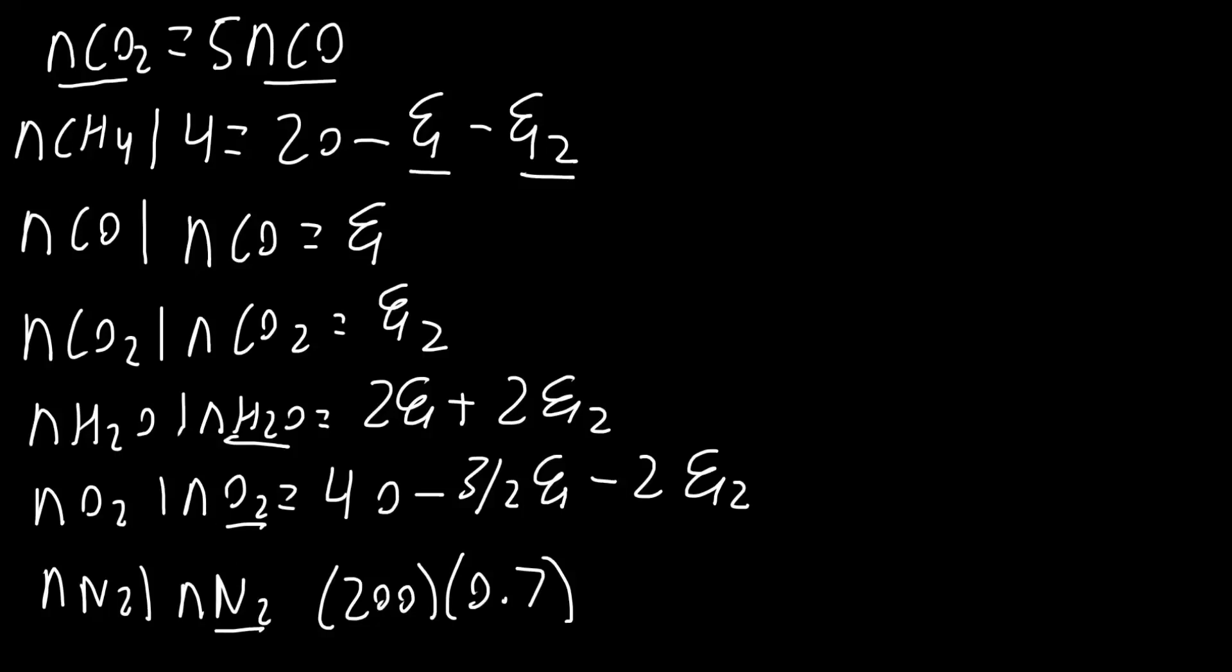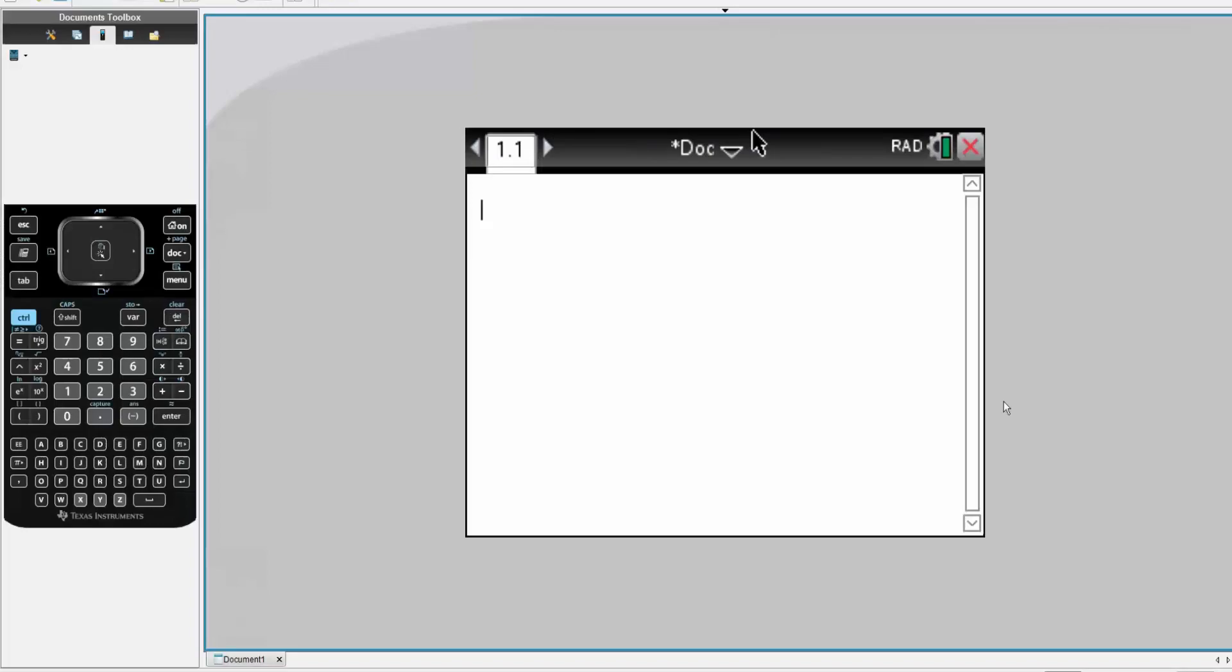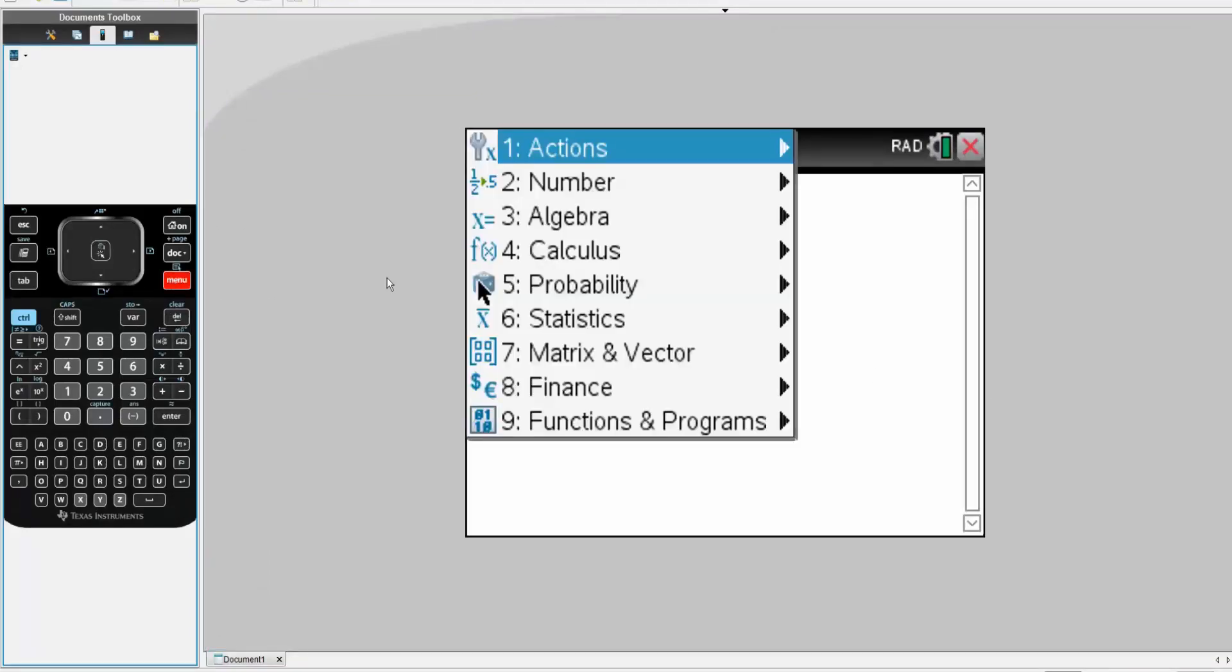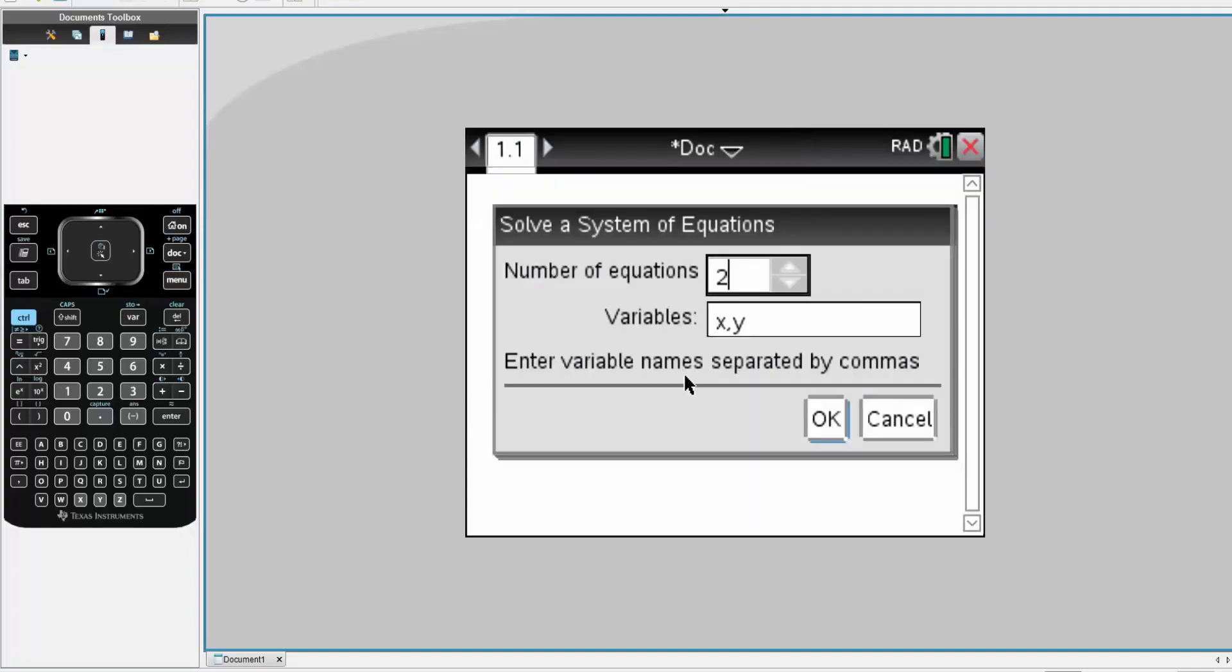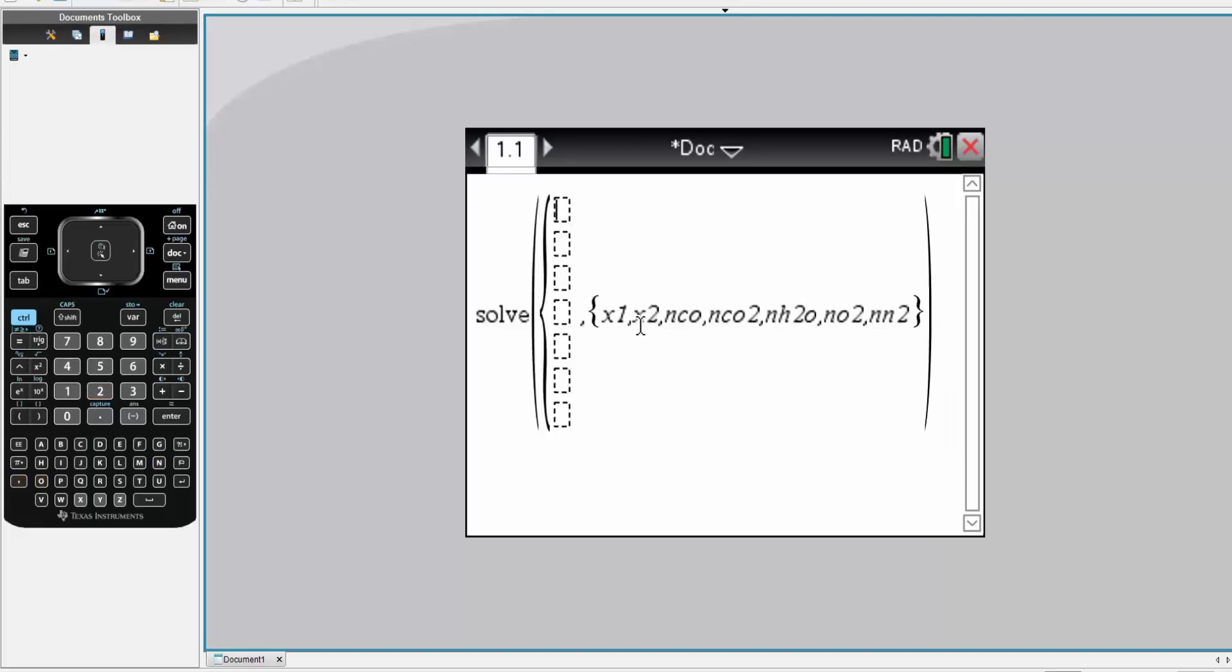And so for problems like these, we will use our calculator. So menu, algebra, seven, one. We have seven equations now, because we already got the CH4. So we have seven, and we want to solve for extent of reaction one, we'll call it X1, comma, extent of reaction two, X2, comma, NCO, comma, NCO2, comma, NH2O, comma, and oxygen, comma, and nitrogen. So we have seven equations and seven unknowns.